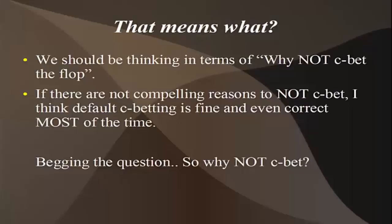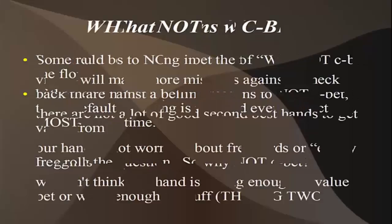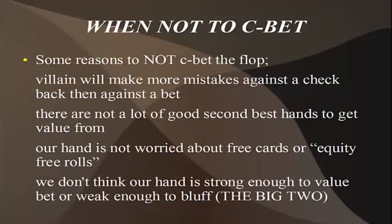If you really can't decide, then probably just put in like a half pot c-bet — how bad could it be? It's only got to get through a third of the time, right? So, begging the question: why not c-bet? I've already said that we could probably c-bet 90 percent of the time and it wouldn't be terrible. Then what are the reasons not to c-bet? We need compelling reasons to not c-bet.